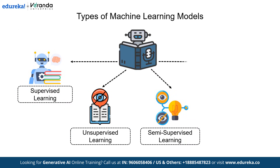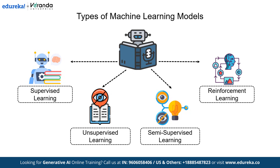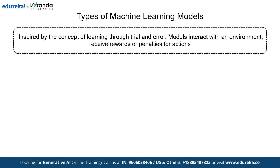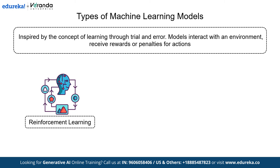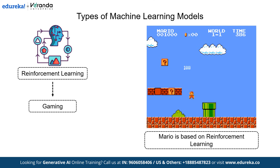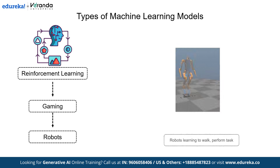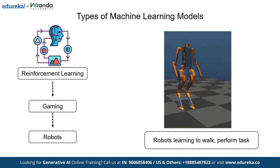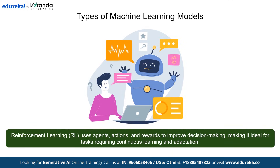Now let's explore reinforcement learning, where AI learns through trial and error. Reinforcement learning is inspired by the concept of learning through trial and error — models interact with an environment, receive rewards or penalties for actions, and refine their strategies over time. For example, Mario AI developed using reinforcement learning learns to navigate levels by optimizing actions through trial and error. In robotics, robots learn to walk, balance, or perform tasks through reinforcement learning by maximizing positive outcomes. Reinforcement learning uses agents, actions, and rewards to improve decision-making, making it ideal for tasks requiring continuous learning and adaptation.